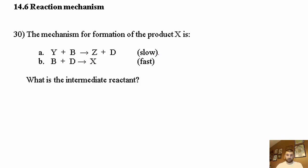They give you two elementary steps, one slow and one fast, so we know the slow one is the rate determining step. The question is what is the intermediate reactant? An intermediate